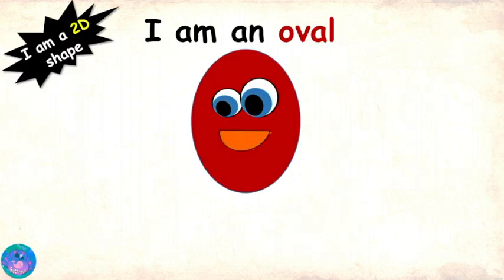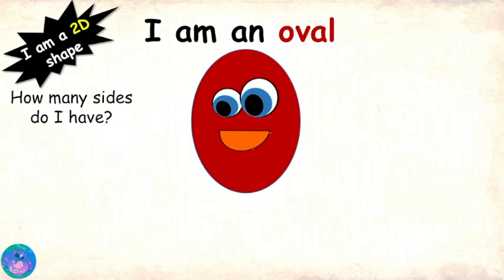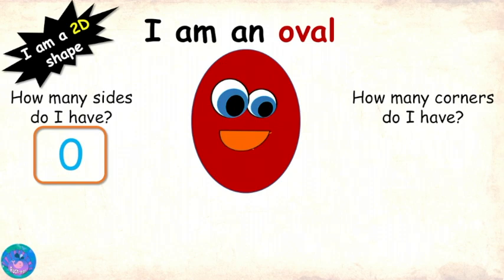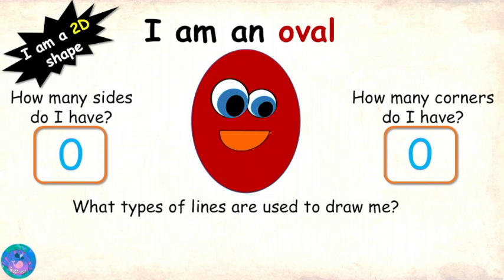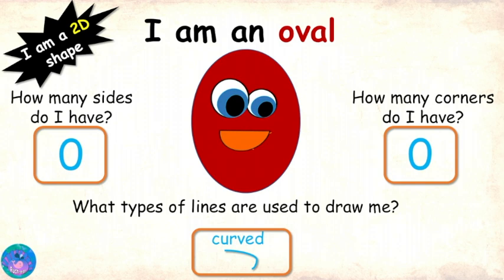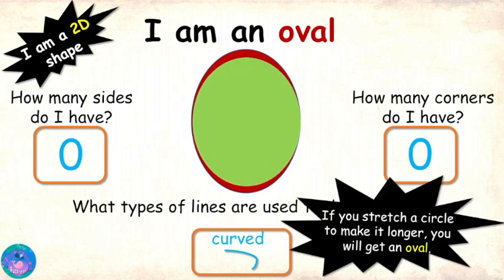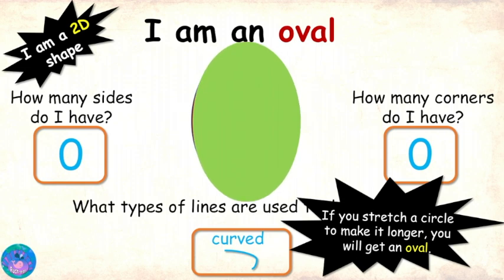Howdy! I am an oval! I'm a 2D shape! How many sides do I have? Zero! How many corners do I have? Zero again! What type of lines do I use to draw me? Straight or curved? Curved! You are similar to a circle, but not really a circle! That's right! If you stretch a circle in opposite directions, it will become an oval!